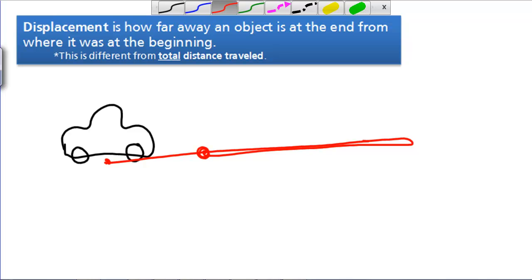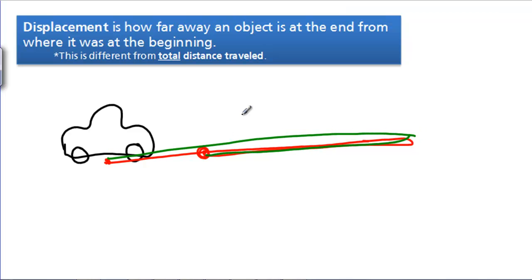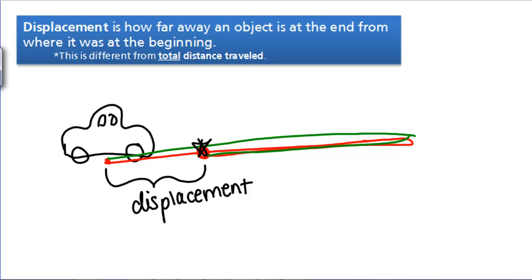then even though the distance you've traveled is this plus this, your displacement is only how far you are from where you started to where you are when you stop. We're used to thinking about distance traveled or displacement, which are the same thing whenever the vehicle is only going in one direction.